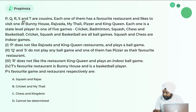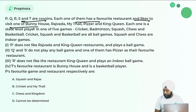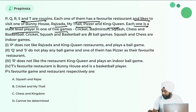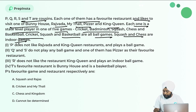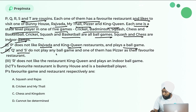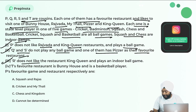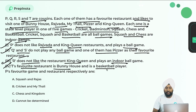Next question: P, Q, R, S, T are cousins. Each has a favorite restaurant — Bunny House, Rajwada, Mithali, Pfizer, King Queen — and each is state-level in one of five games: Cricket, Badminton, Squash, Chess, Basketball. Squash and Chess are indoor games. P does not like Rajwada and King Queen and plays a ball game. Q and S do not play any ball game and one of them has Pfizer. R does not like King Queen and plays an indoor ball game. T's favorite restaurant is Bunny House and he is a basketball player. Find P's favorite game and restaurant.